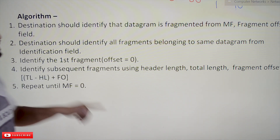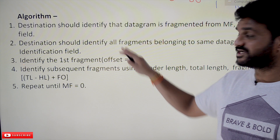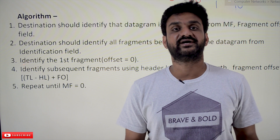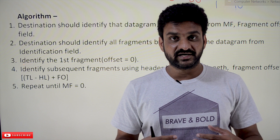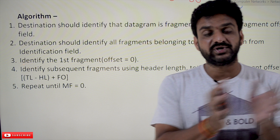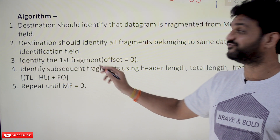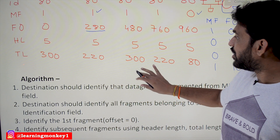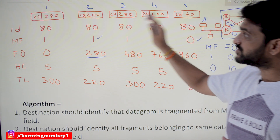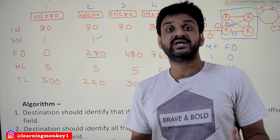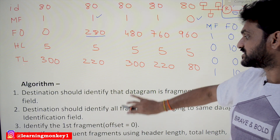The next step in the algorithm: the destination should identify all fragments belonging to the same datagram using the identification number. It has to wait for a certain period of time, gather all the fragments received, and decide which packets belong to the same source datagram. This is done using the identification field — all fragments having the same identification number belong to the same datagram.